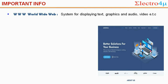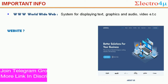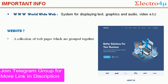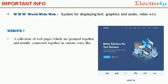Triple-W is a system for displaying text — it is one type of system that displays text, graphics, audio, and video. After worldwide web, we go to a new website. So what is a website? A website is a collection of web pages which are grouped together.